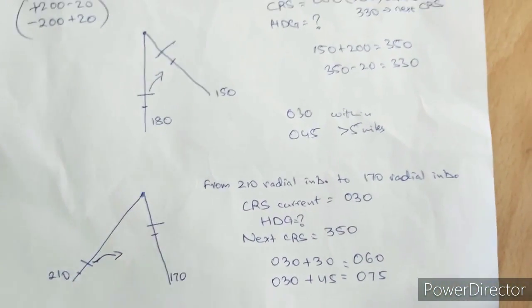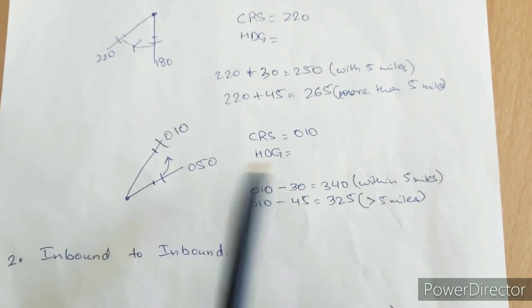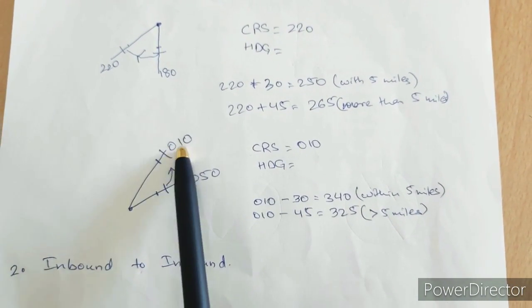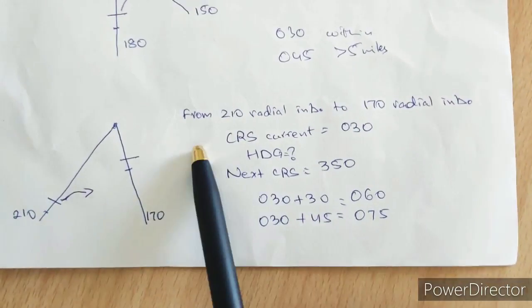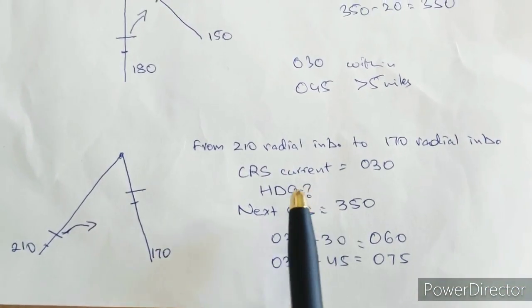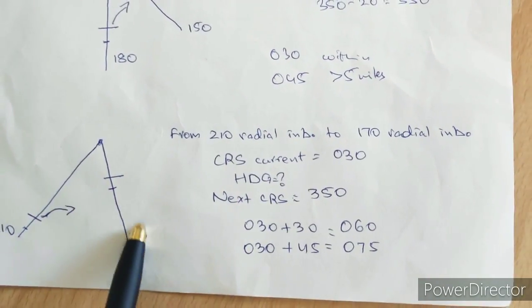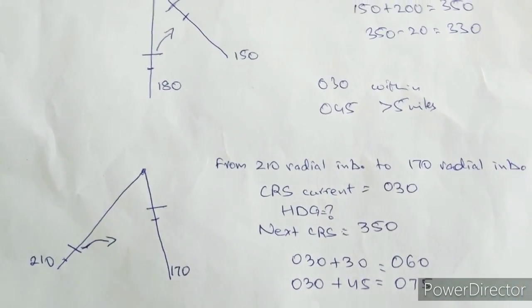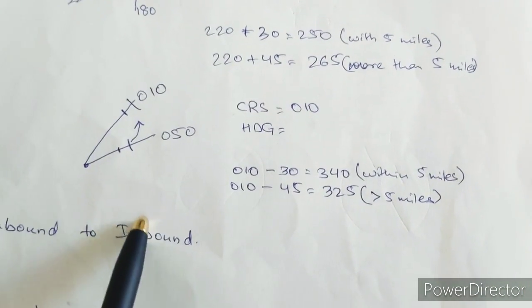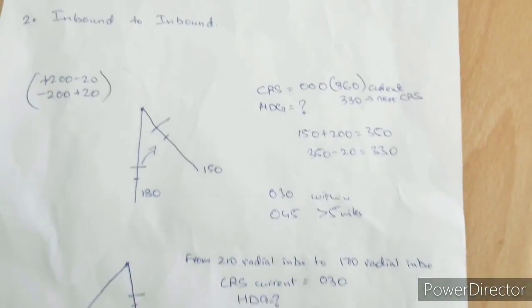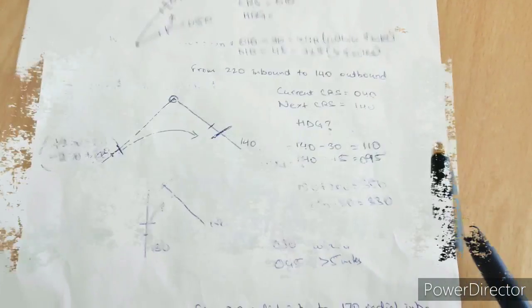So what we understand is that in the outbound to outbound leg we take the heading correction from our new course to intercept it. But in inbound to inbound, we take the heading correction from our current course to intercept the new radial inbound. Since we are going inbound the radials converge, and when going outbound the radials diverge.